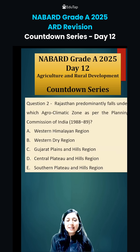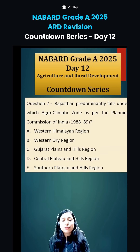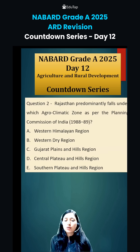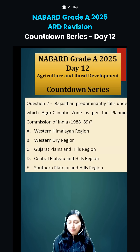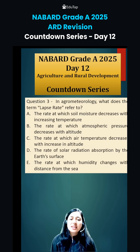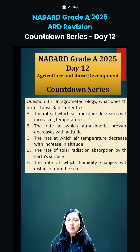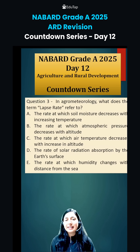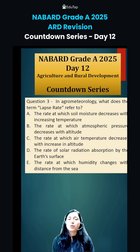The next question is regarding the agroclimatic zone — you have to tell me which agroclimatic zone Rajasthan predominantly falls under. Learn about all agroclimatic zones and which states fall under them. The third question is regarding lapse rate — you have to tell me what you understand by lapse rate. Read the options and then give the answer. These were the questions of Day 12.